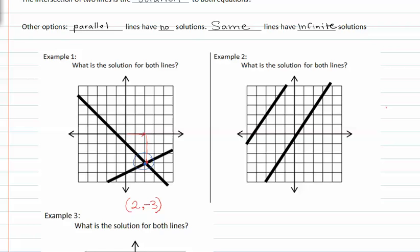In example two, we're asked to find the solution for both lines. If we look at the slope of the lines, we can see that the rise is three and the run is two. And once again the rise is three and the run is two.